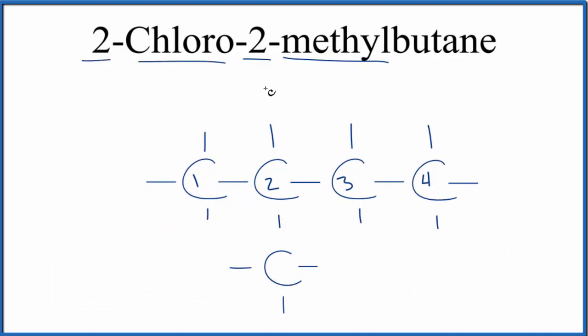The 2-chloro, that just means we're going to put a chlorine on the second carbon as well. And this is the structure for 2-chloro-2-methylbutane, also called tert-amyl chloride.